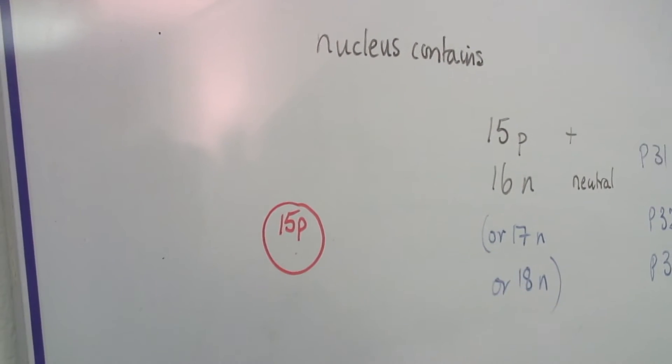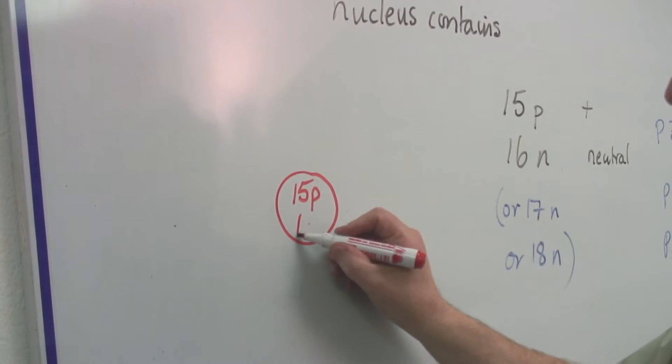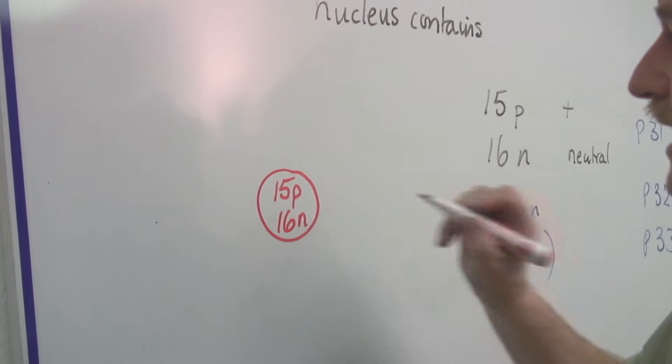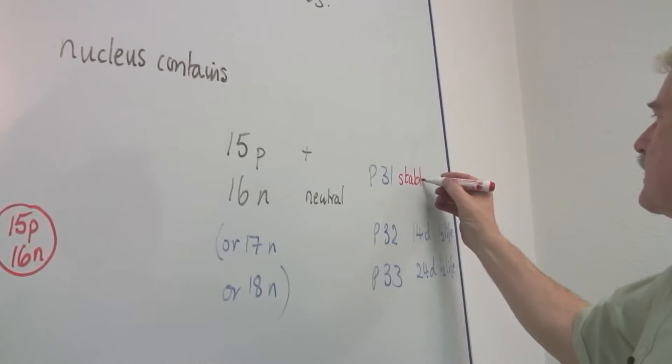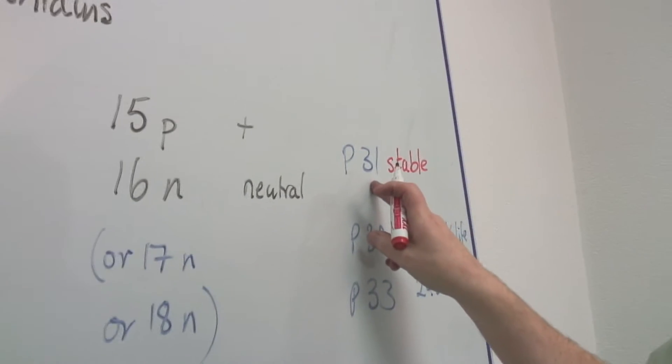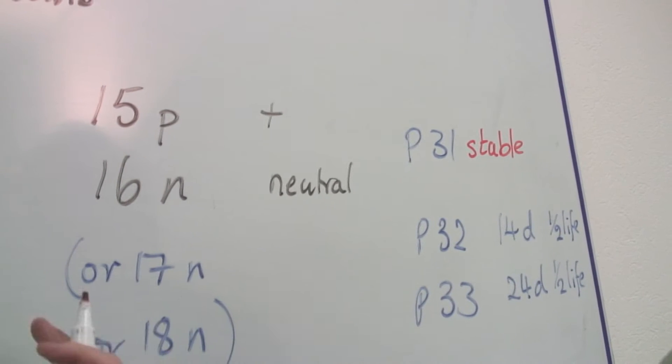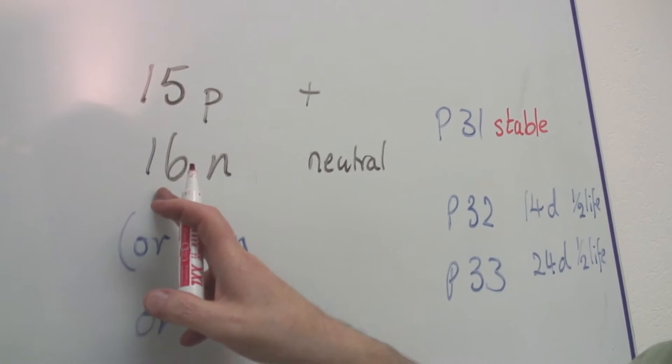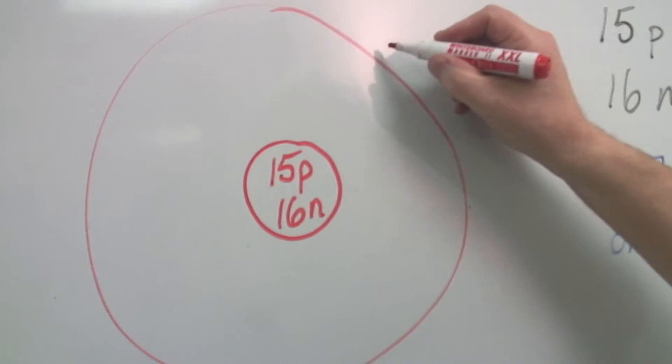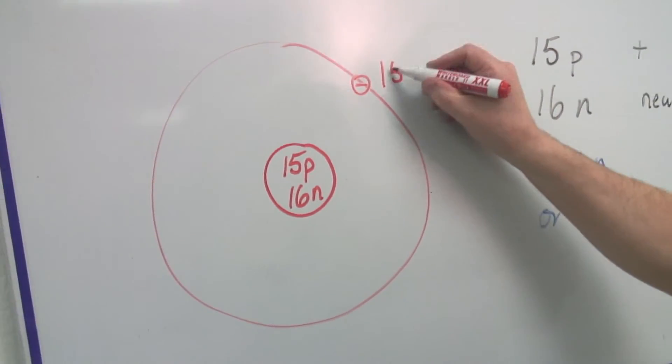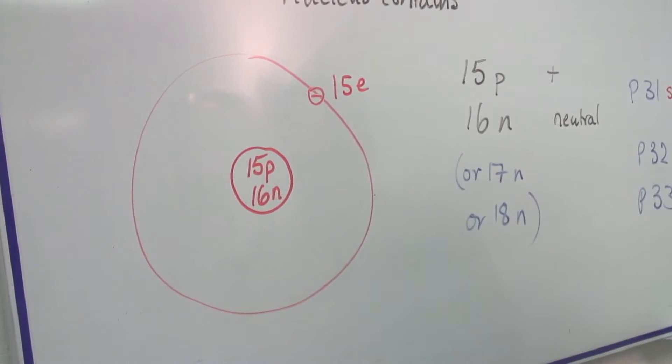But within that nucleus there are also neutrons. In the stable isotope, called phosphorus-31, there are actually sixteen neutrons. Around this there will be fifteen electrons in a neutral atom.